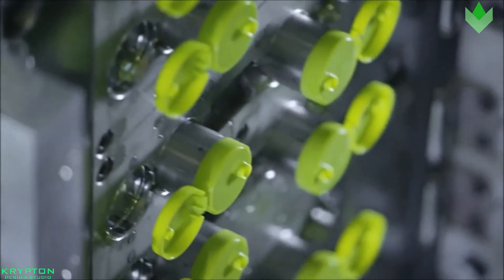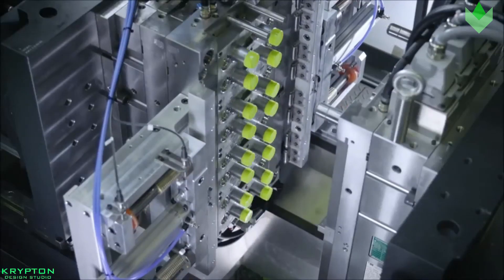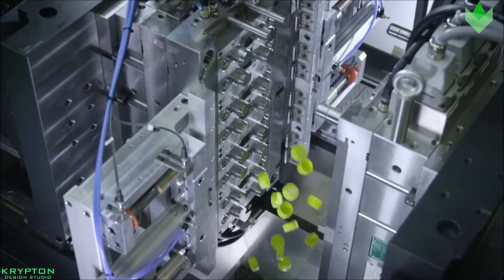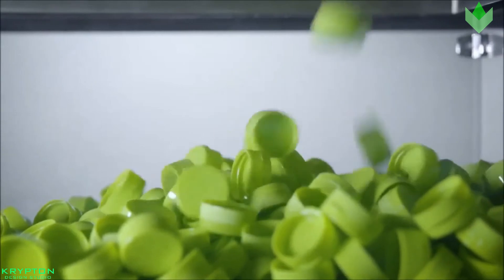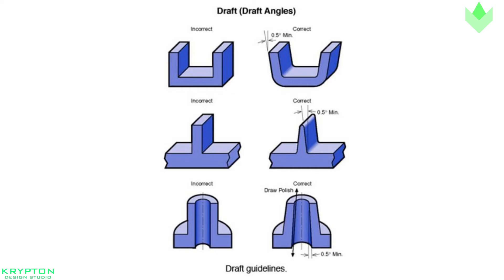The amount of draft required can depend on the surface finish of the mold. A smooth polished tool surface will allow the part to eject with less draft than a standard tool surface. The amount of draft required will also vary with the geometry and surface texture requirements of the parts.